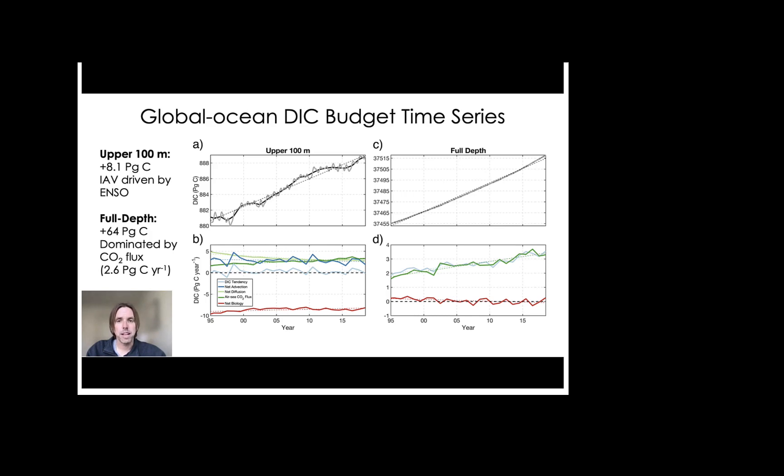Now the full depth DIC pool, which is shown in C, gains 64 petagrams of carbon over 24 years, with the DIC tendency, shown below in D as a light blue line, very closely tracking the air-sea CO2 flux, which contributes roughly 2.6 petagrams of carbon per year. And note that when integrated across the full depth ocean, the advection and diffusion terms cancel, as circulation just redistributes DIC and does not create sources or sinks globally.